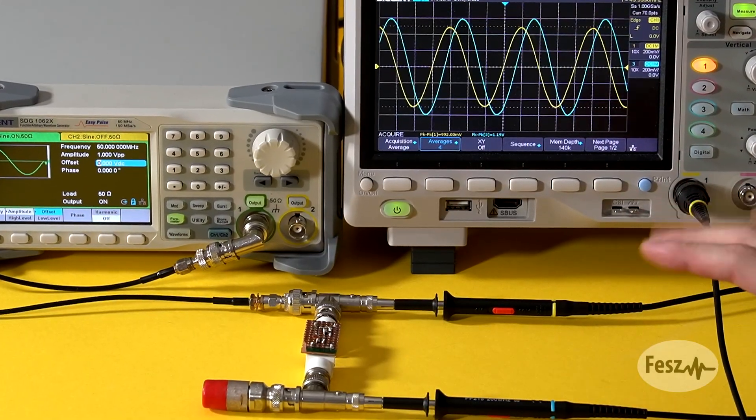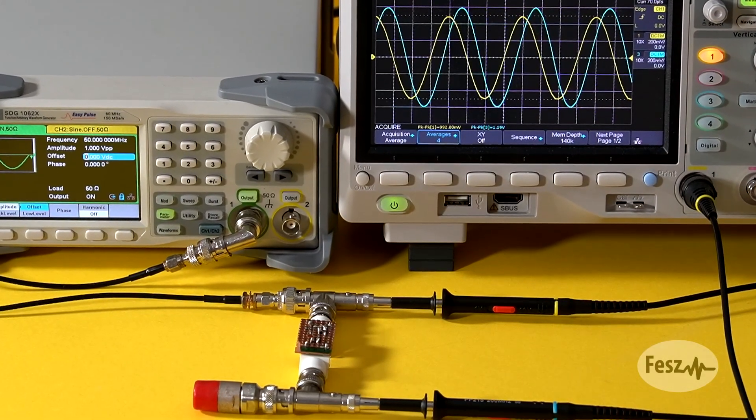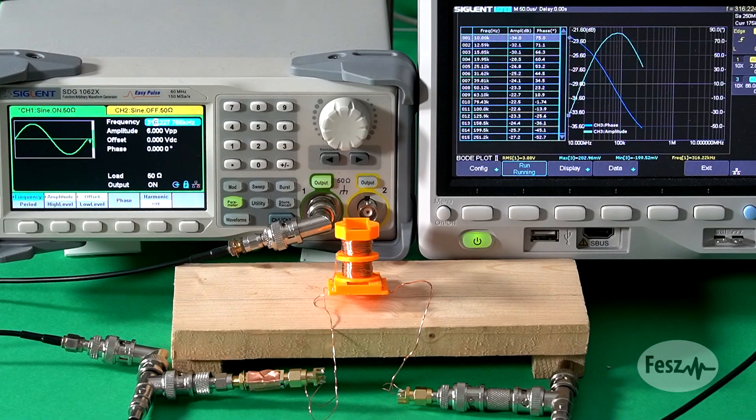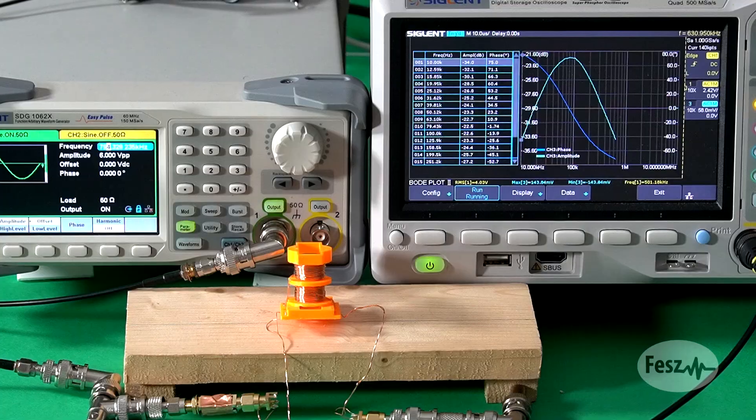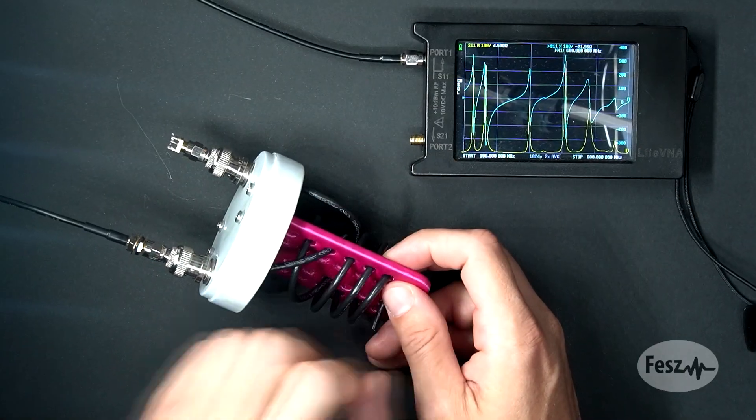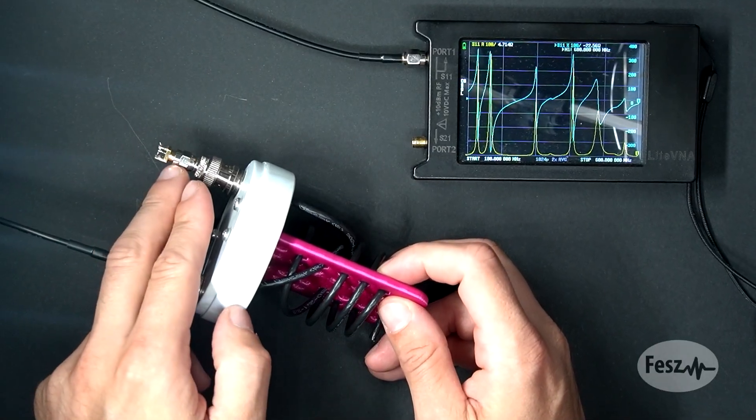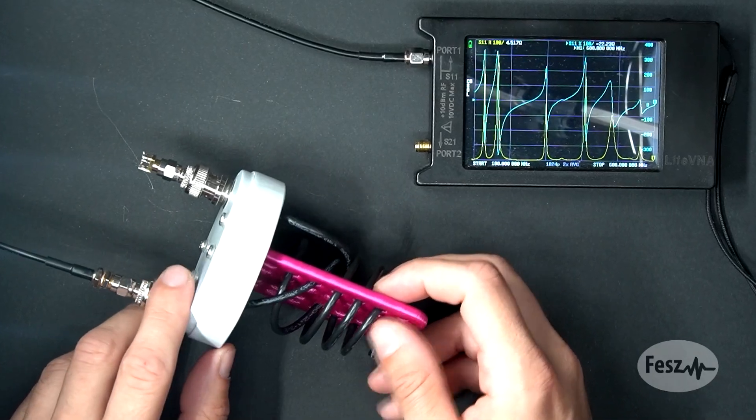When it comes to impedance matching, multiple techniques are in common use, each with its own benefits and limitations. When choosing one method over another, the general parameters to consider are the size and necessary materials, as well as the losses presented by the matching circuit.